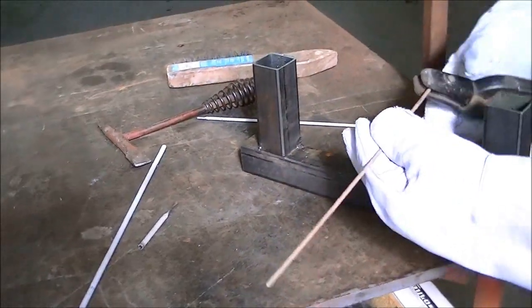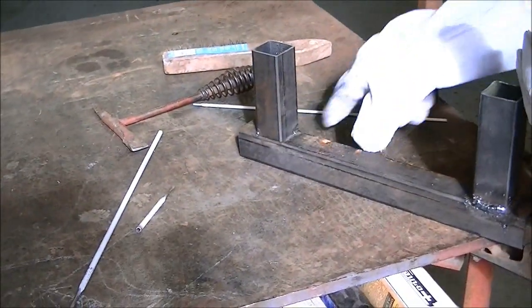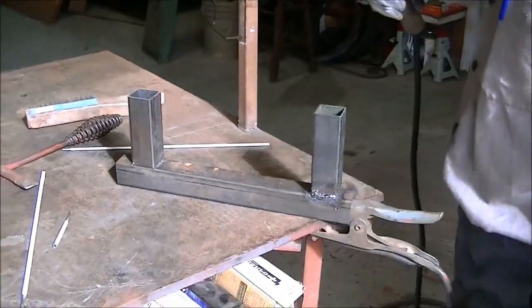So we're going to start with a 6013 on this first try and we're going to weld right across here and let you look through the lens and see what we're seeing.